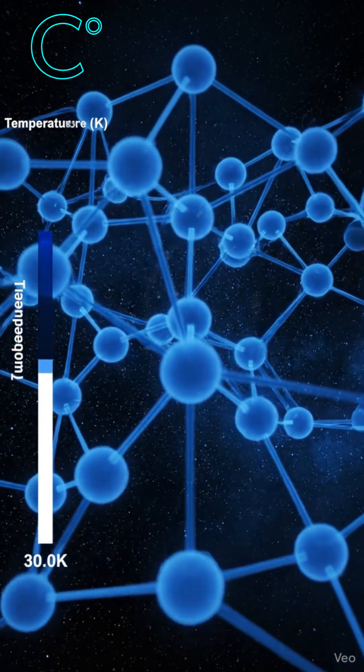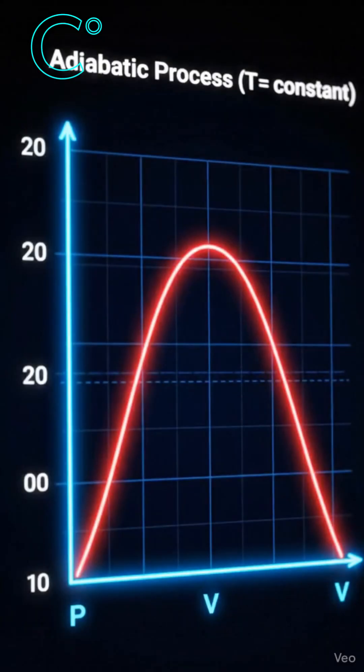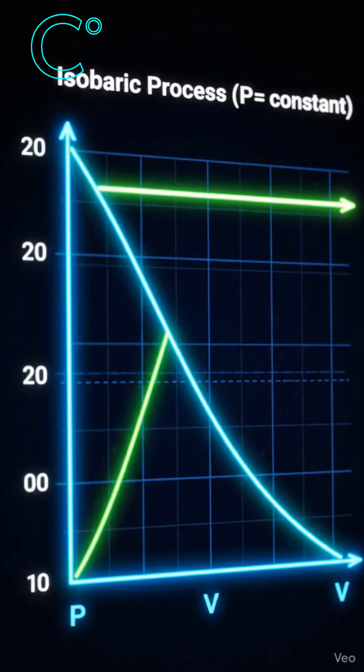The third law of thermodynamics says as temperature approaches absolute zero, entropy approaches zero. But absolute zero can never be reached.